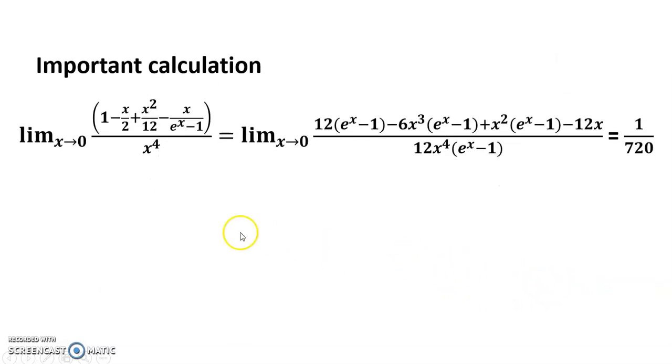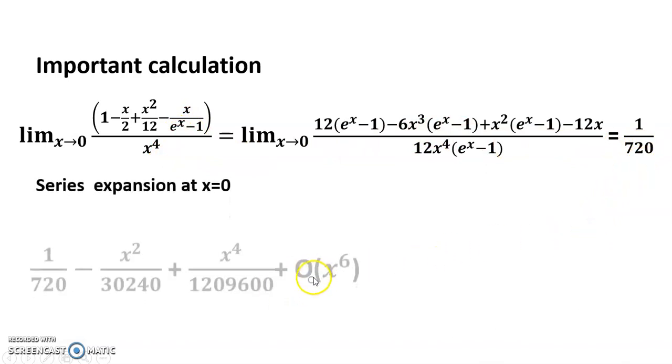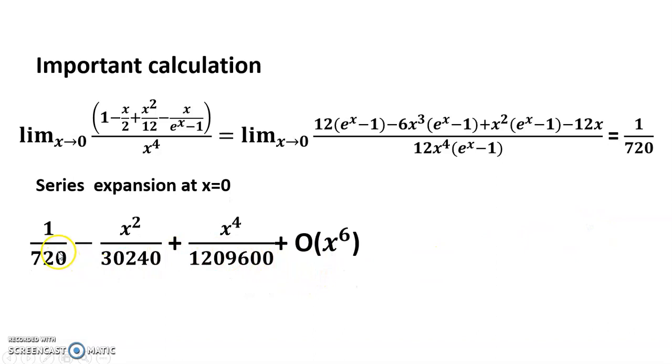Important calculation: limit x tends to 0 of (1 - x/2 + x²/12 - x)/(e^x - 1) times 1/x^4 can be written this way. And the limit value is 1/720, because if series is expanded, then I get 1/720, this value. And applying the Taylor series, e^x equals 1 + x + x²/2! + x³/3!. Just putting in here, and in a simple way, you can find out this value. I hope it is clear. The calculation you will solve it, and I hope you can easily find out.